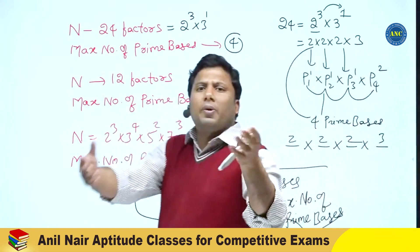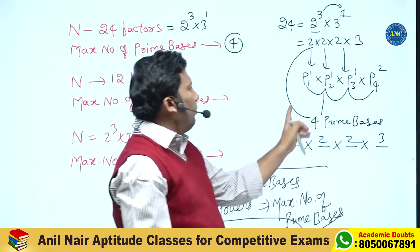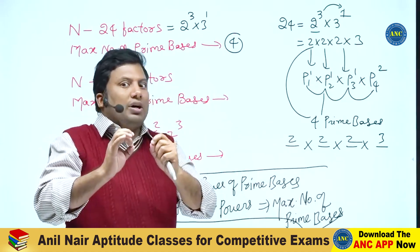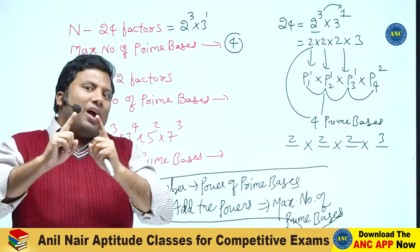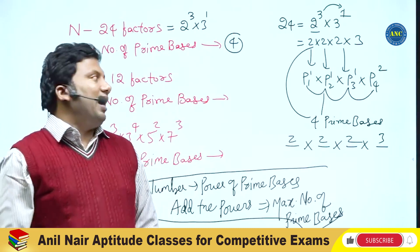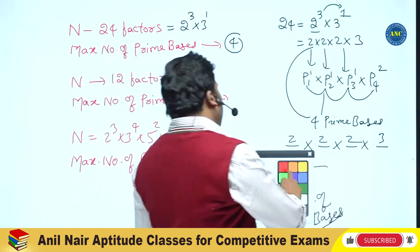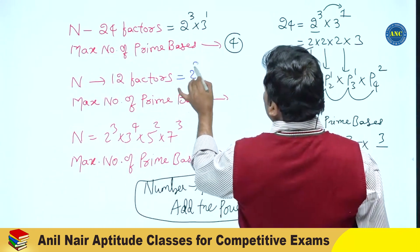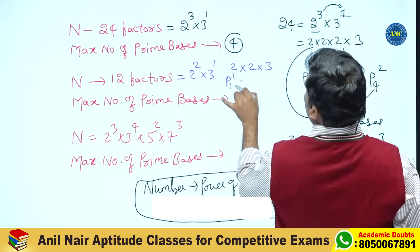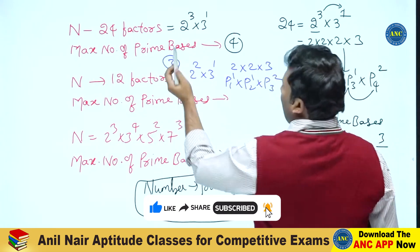Why are we adding? Because 2 cubed = 2×2×2 and 3 power 1 = 3, giving 4 separate prime slots. For 12 factors: 12 = 2 squared × 3 power 1 = 2×2×3, which gives p1 power 1, p2 power 1, p3 power 2. So 2+1 = 3. The maximum number of prime bases for a number with 12 factors is 3.